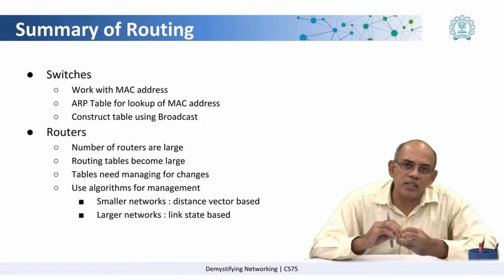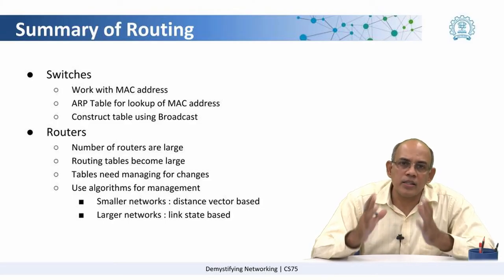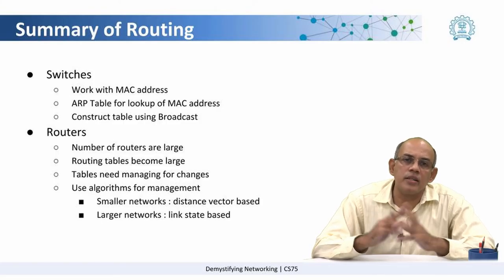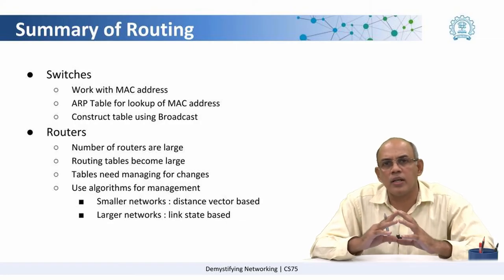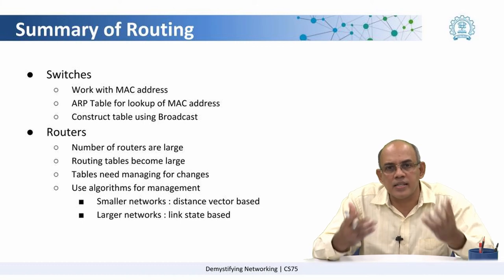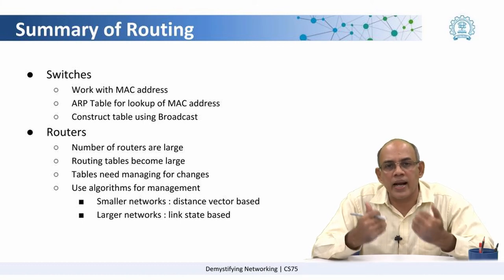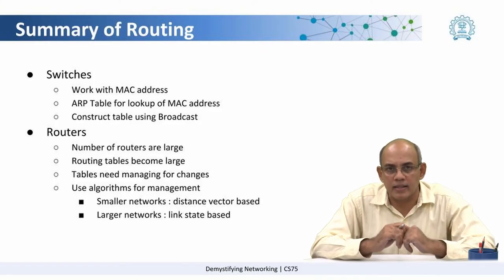In the case of a switch, the construction of this table is a fairly simple matter. It is called the ARP table, and the mechanism by which the switch determines the destination MAC address is also fairly simple. It simply broadcasts into its local network asking who has this IP address, and the corresponding machine responds with its MAC address, saying I have the IP address, and returns the MAC address.